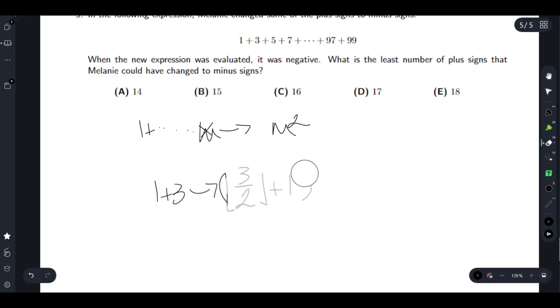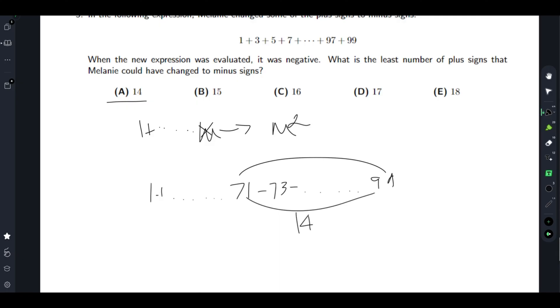So we just have to figure out how many plus and minuses are. So if there's 14 minuses, then there's 1 plus all the way to 71, and then 73 minus to 99. This is 14 minuses because we passed 28 numbers, and that's 14 subtractions. So 1 plus to 71 is 71 plus 1, which is 72, so this is 36 squared.